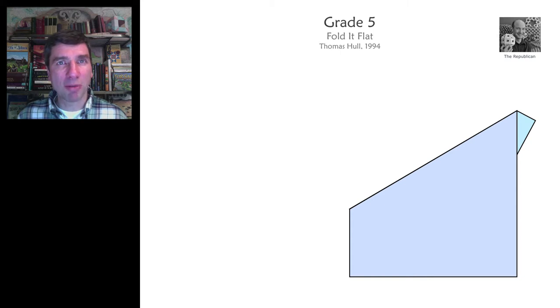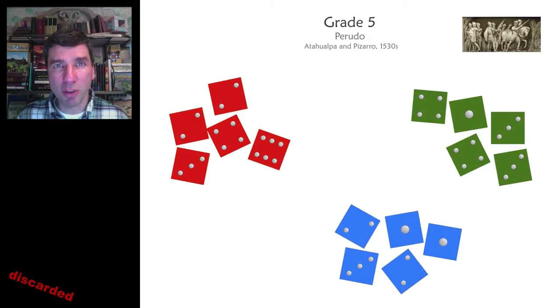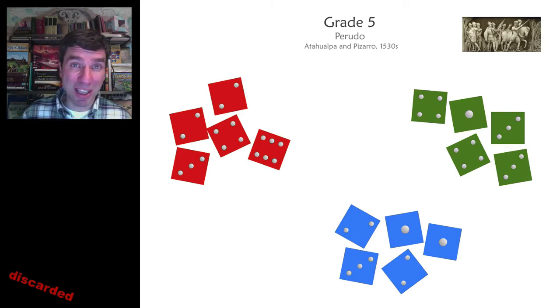This origami problem replaces one of the great games of human history, Perudo. Perudo was played in the 1500s between Atahualpa, the last king of the Inca Empire, and Pizarro, the Spanish conquistador, who eventually was responsible for him being strangled.